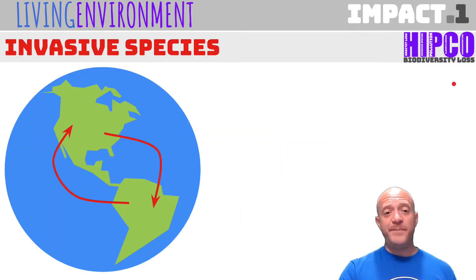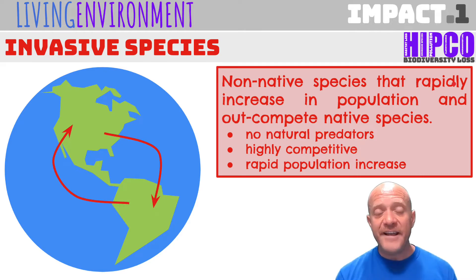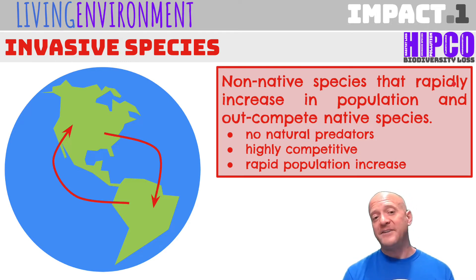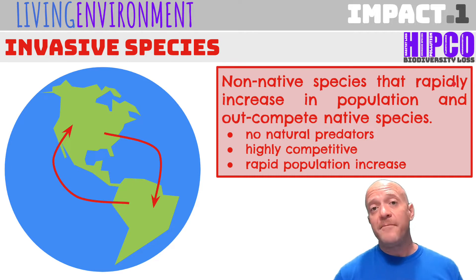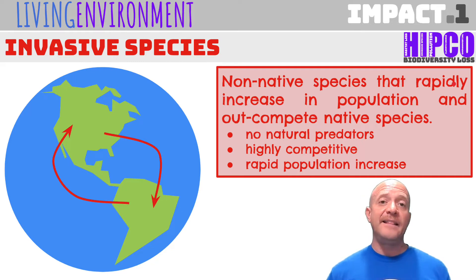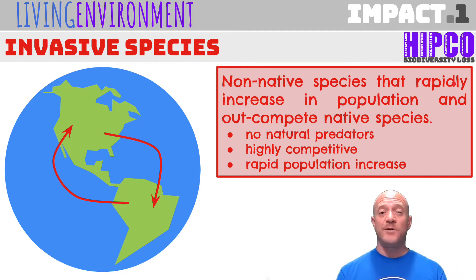Invasive species are non-native species that rapidly increase in population and out-compete native species. Invasive means invading — much like a colonizer or explorer. Invasive species don't have natural predators in their new environment, though they did where they originally came from. That makes them highly competitive. Because they are successful at competition, they have high levels of fitness and favorable adaptations, which allows for a rapid population increase. As their population grows, they take resources away from native species that may be more sensitive.